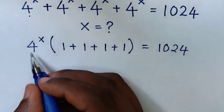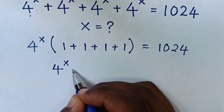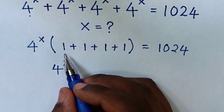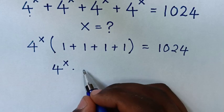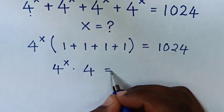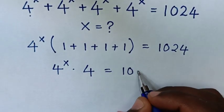Then our equation will be 4 power x times the sum of 1 plus 1 plus 1 plus 1 is 4, then is equal to 1024.